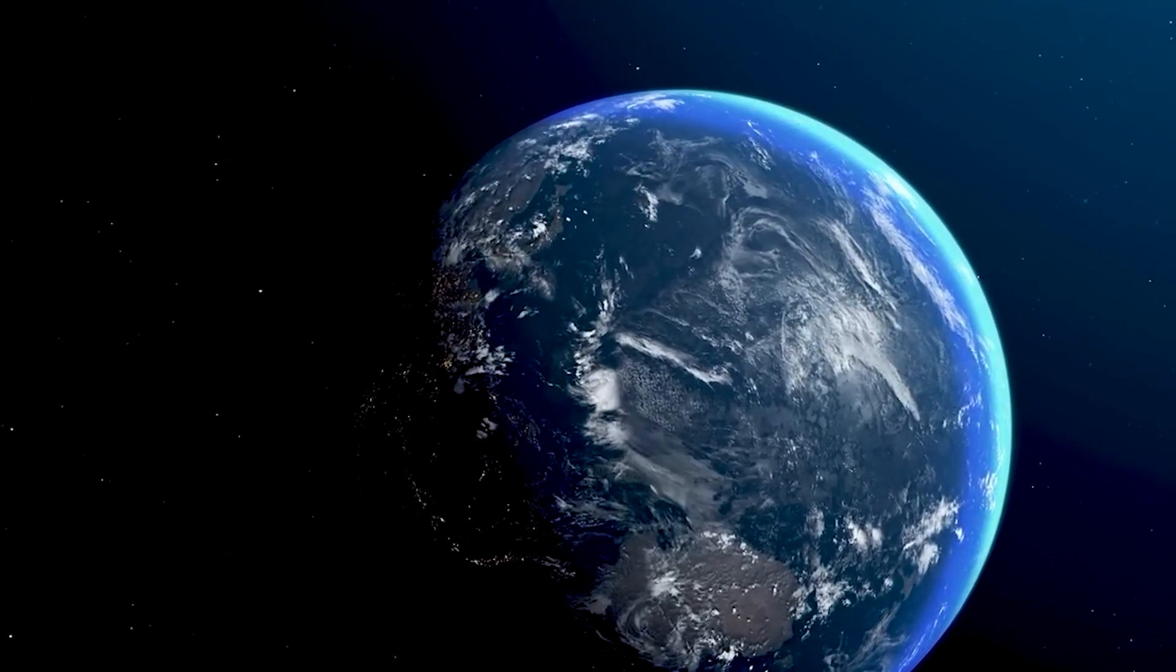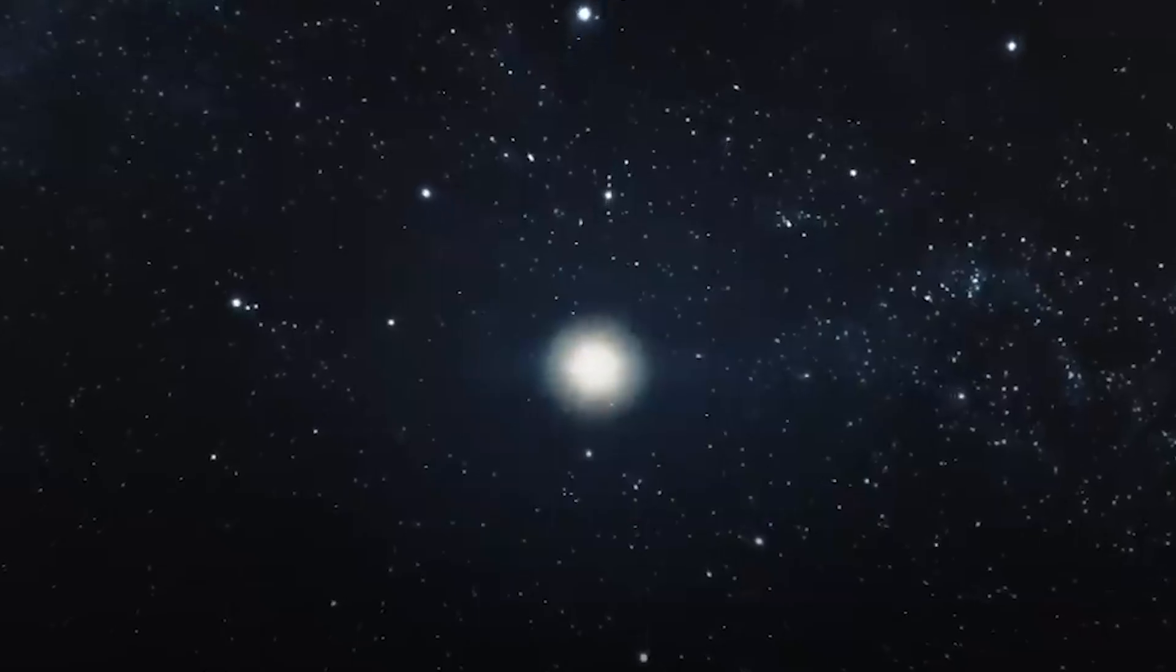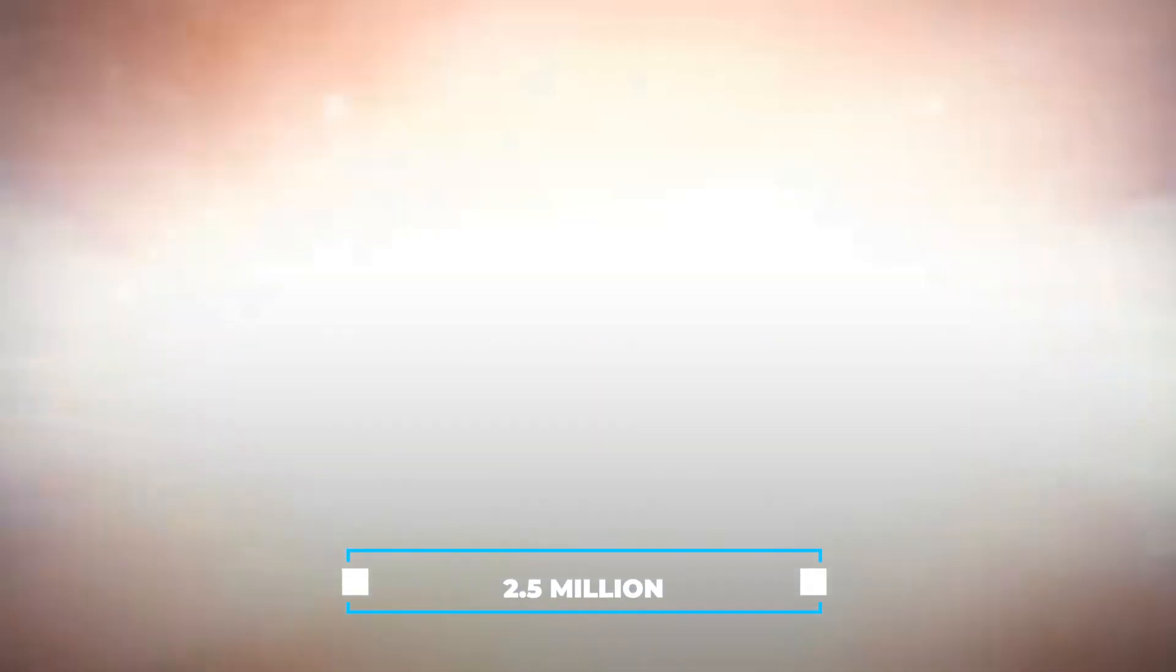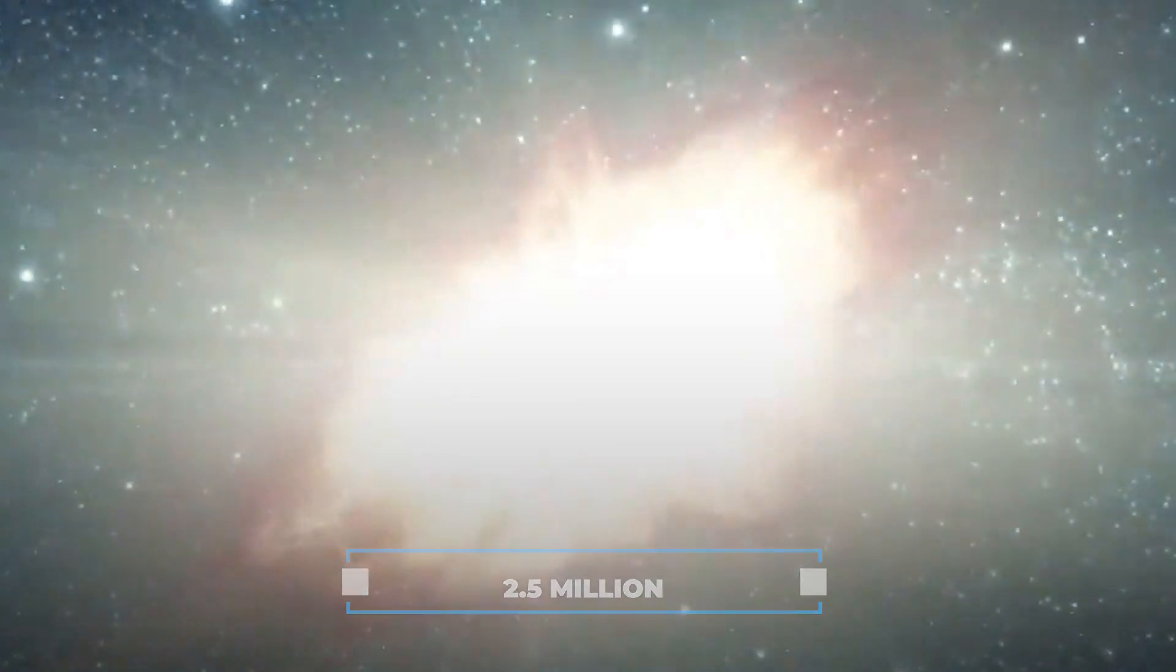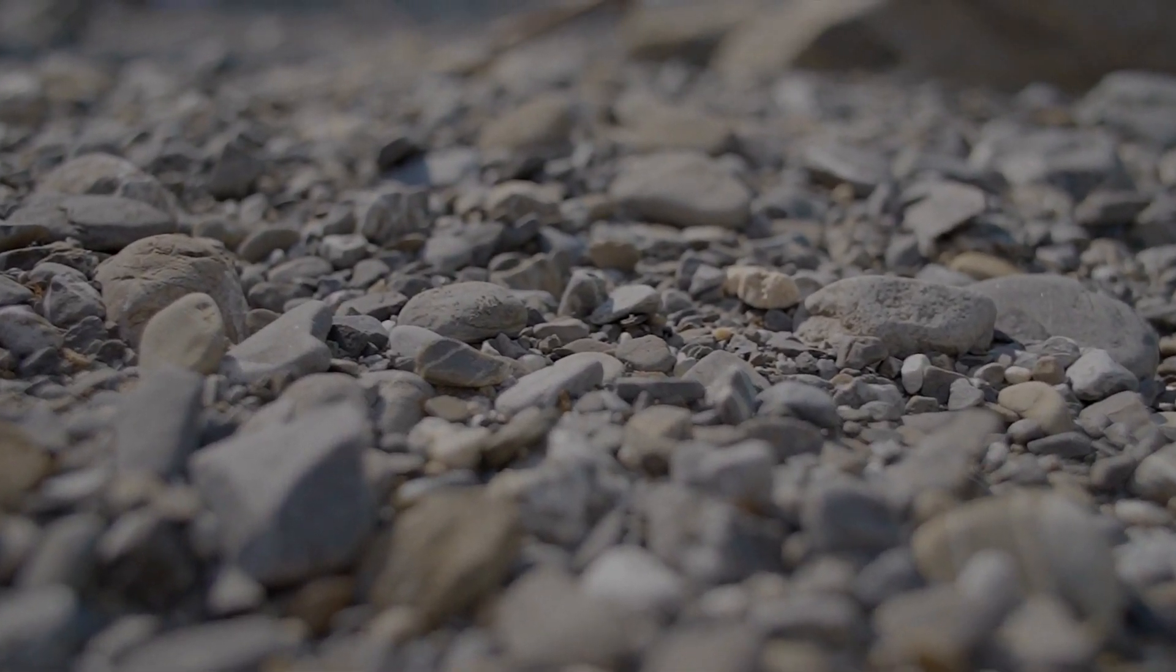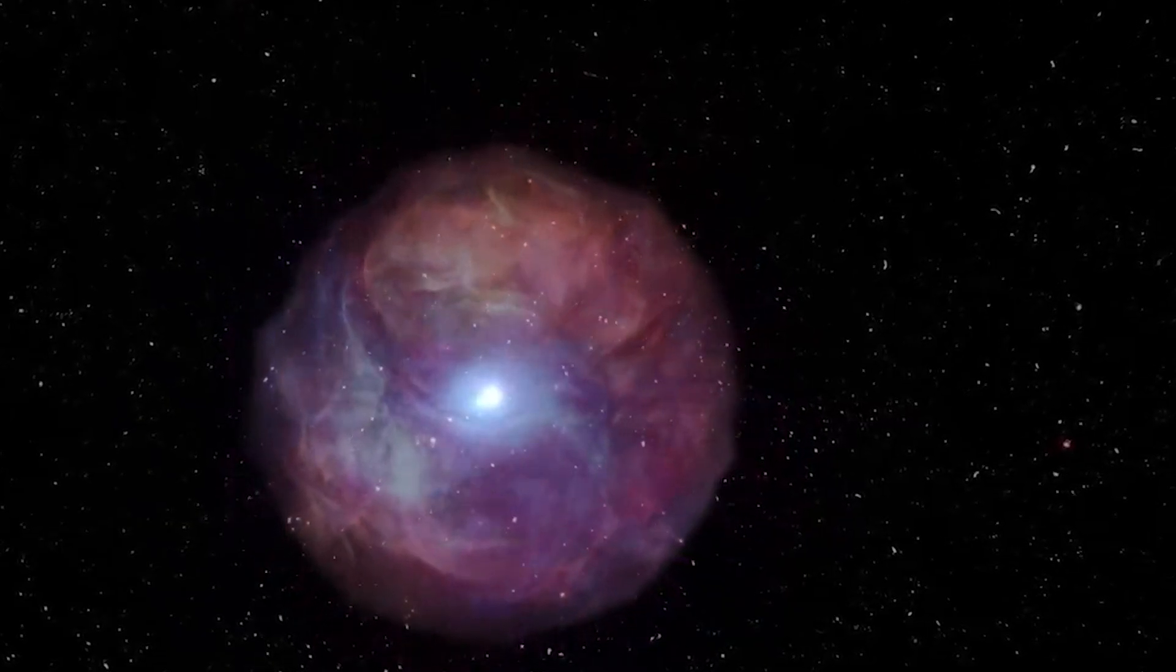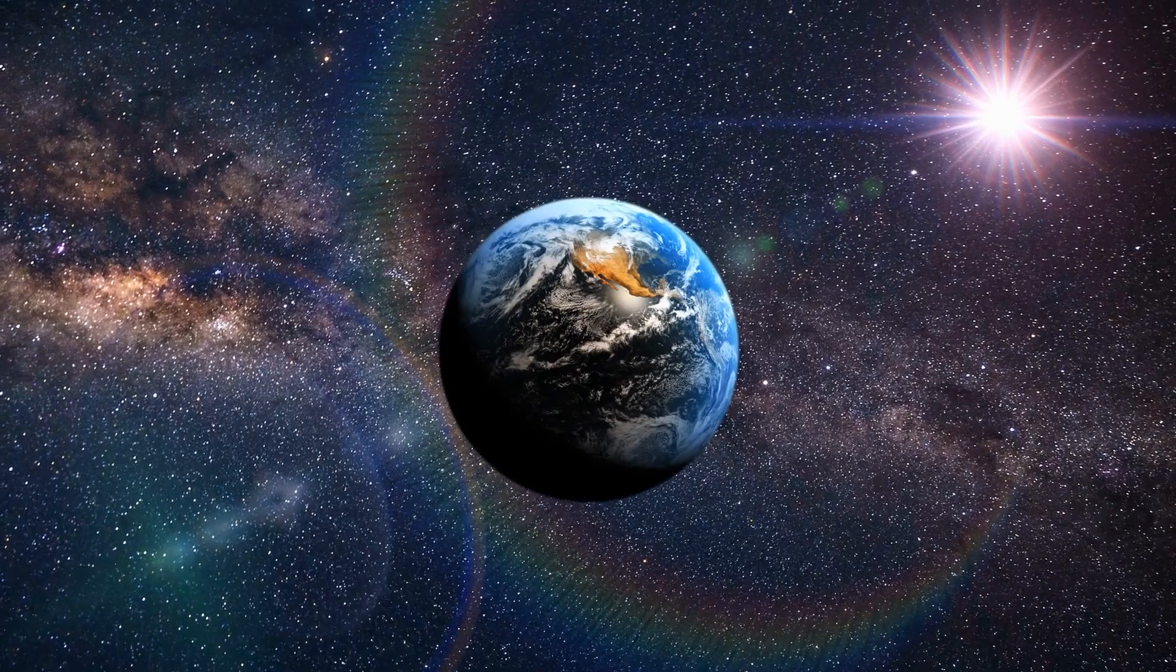Scientists have also found clues of another supernova explosion that happened around 2.5 million years ago. They discovered this by looking at rocks and found a lot of certain elements like iron and manganese in a particular layer. Luckily, this supernova was far away, so it didn't harm Earth.